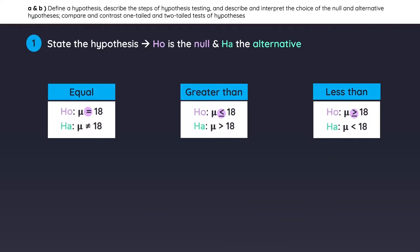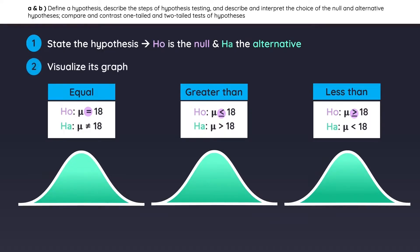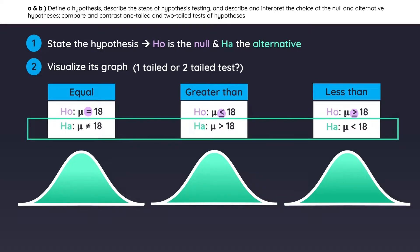Once you state the hypothesis, step number two is to visualize the graph to avoid making mistakes. Ask yourself: is it a one-tailed test or a two-tailed test? The easiest way to know is by looking at the alternative hypothesis. If it is testing for equality, it's a two-tailed test. If it is greater than, it's a right-tailed test. And if it's less than, it's a left-tailed test.